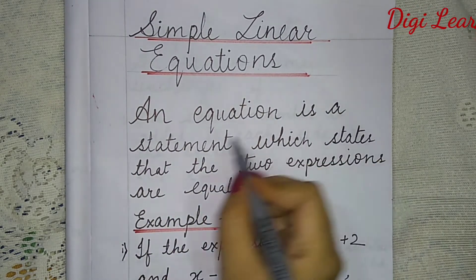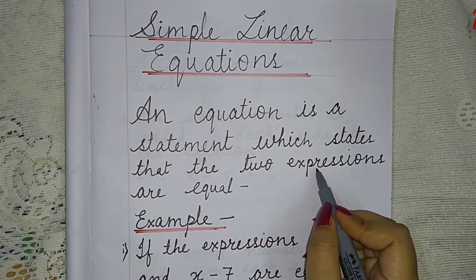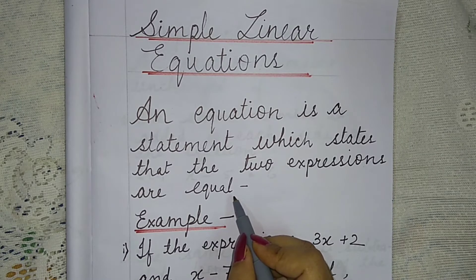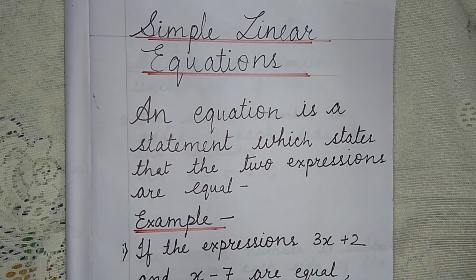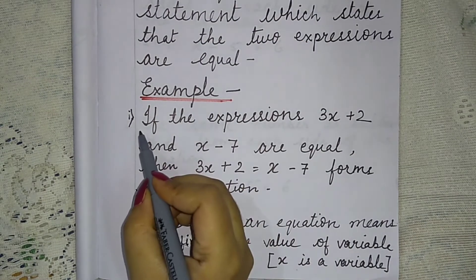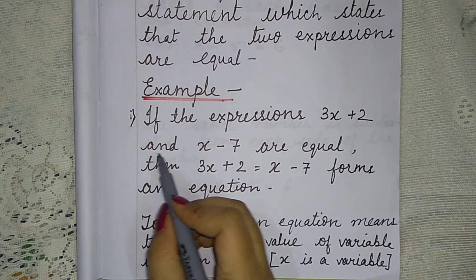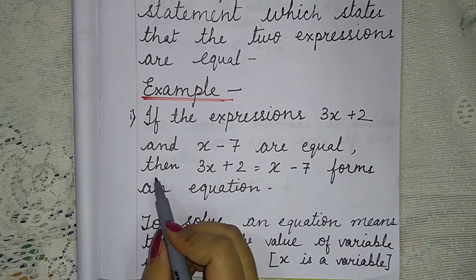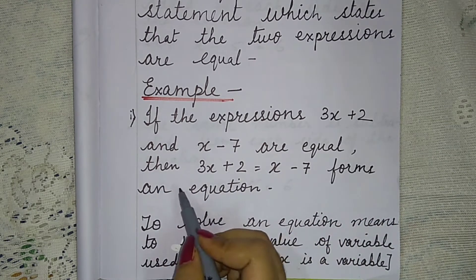An equation is a statement which states that the two expressions are equal. An equation shows that two expressions are equal. Let us see with an example. If the expressions 3x plus 2 and x minus 7 are equal, then 3x plus 2 is equal to x minus 7 forms an equation.